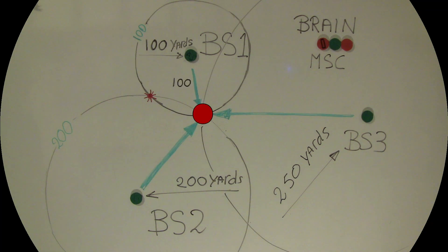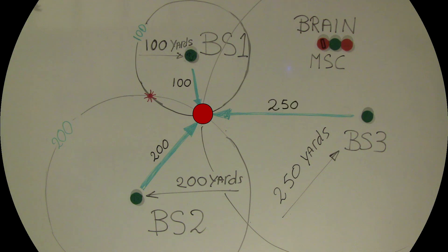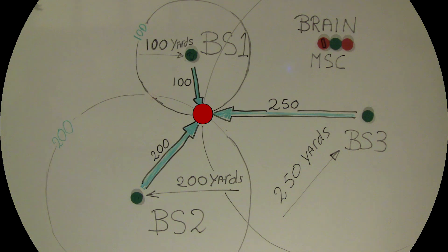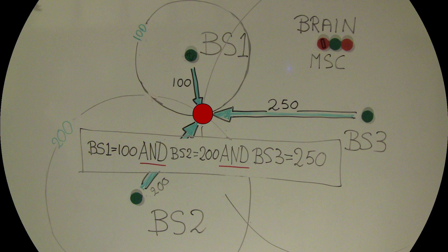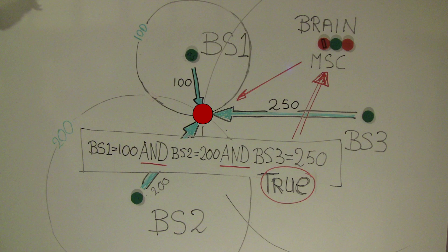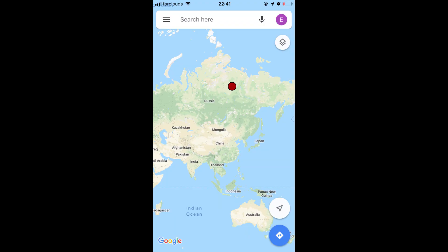You are 100 yards away from base station controller number one, 200 yards from BSC 2, and 250 yards from BSC number three — this is your exact location. A: Is the distance to BSC 1 100 yards? Yes, that's true. B: Is the distance to BSC 2 200 yards? Yes, that's also true. C: Is the distance to BSC 3 250 yards? Yes, that is also true. Your exact location is confirmed. And that's how your smartphone knows your exact location.